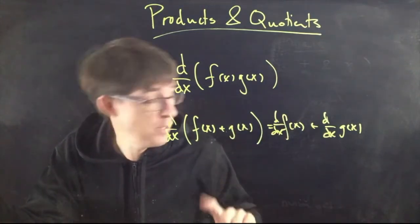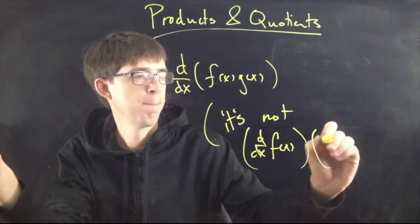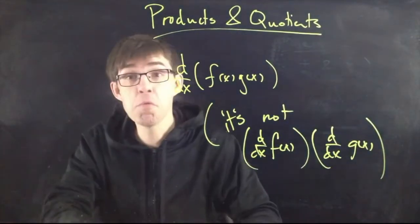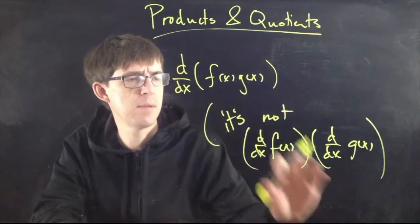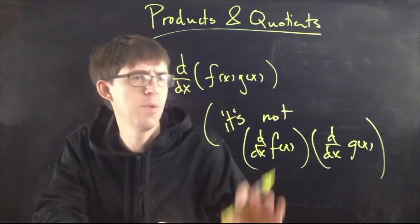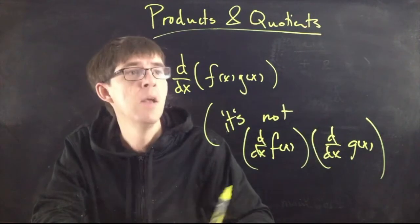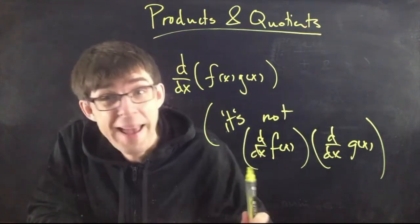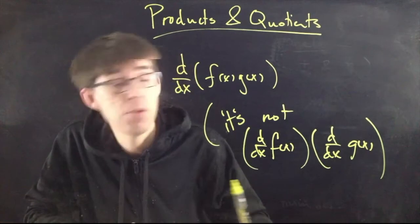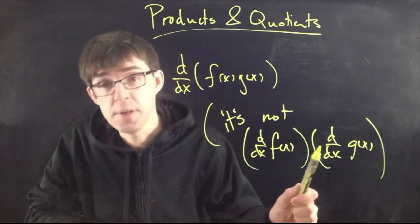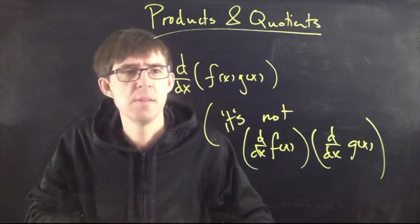For a product, you cannot do that. Unfortunately, you might wish it were that simple, but it's not. When functions are added you can do something simple, but when they are multiplied you cannot. There's a special rule you need to use — it's called the product rule — and it's a little more complicated.